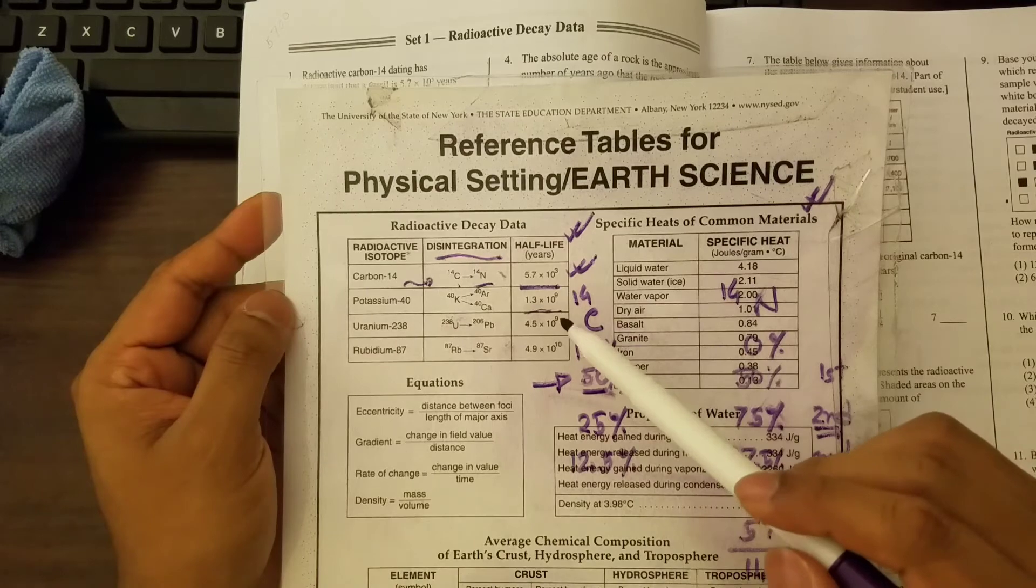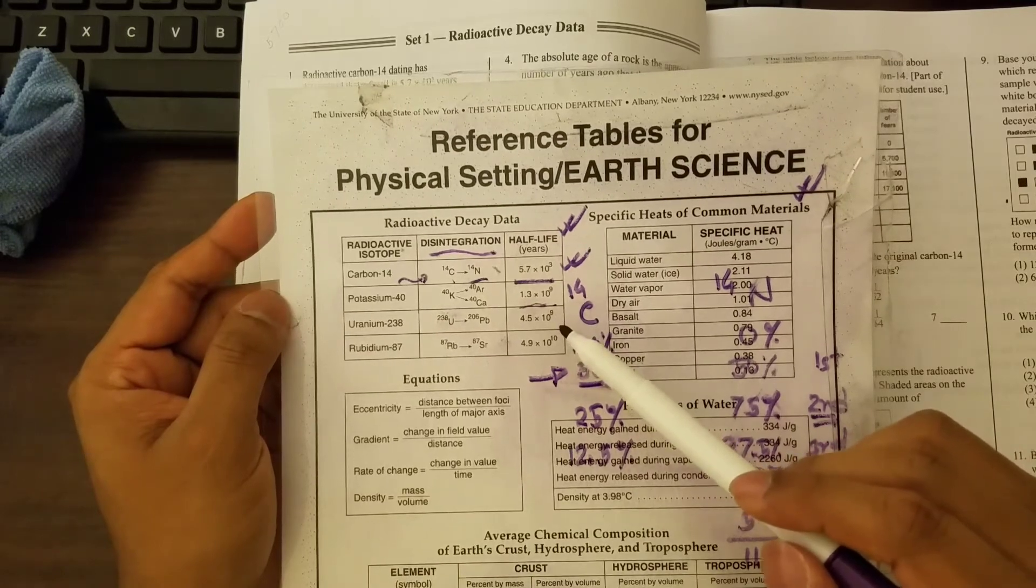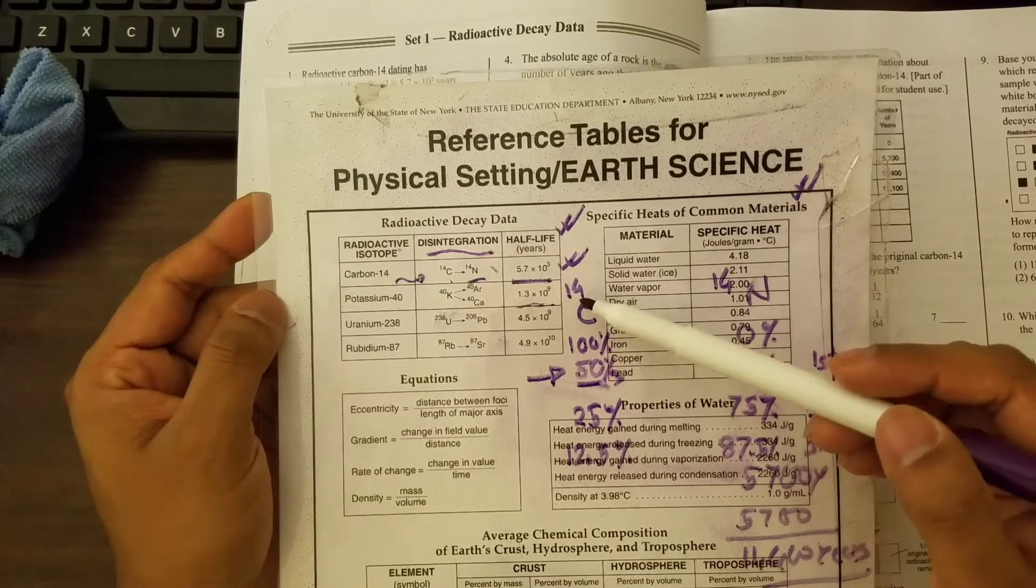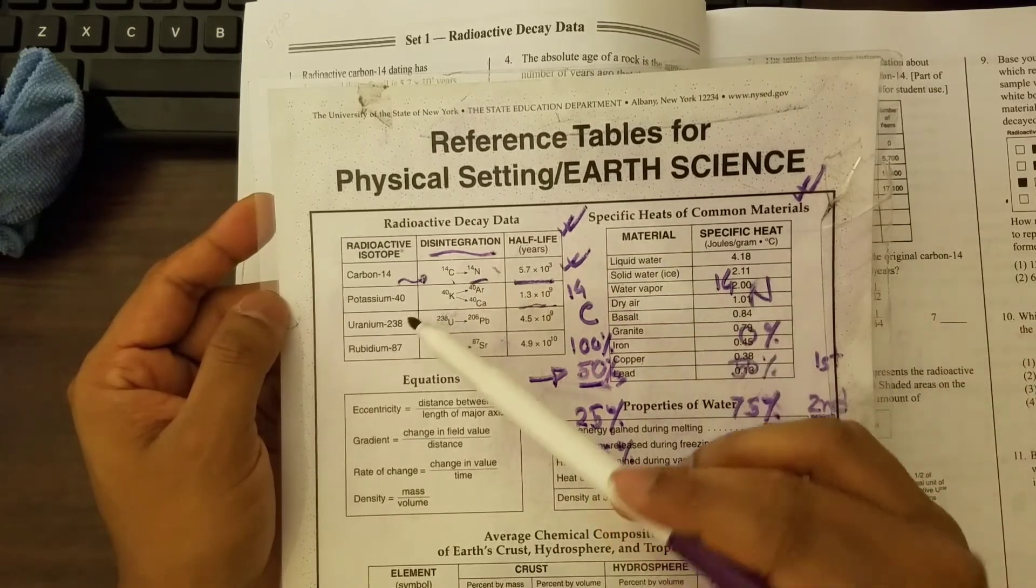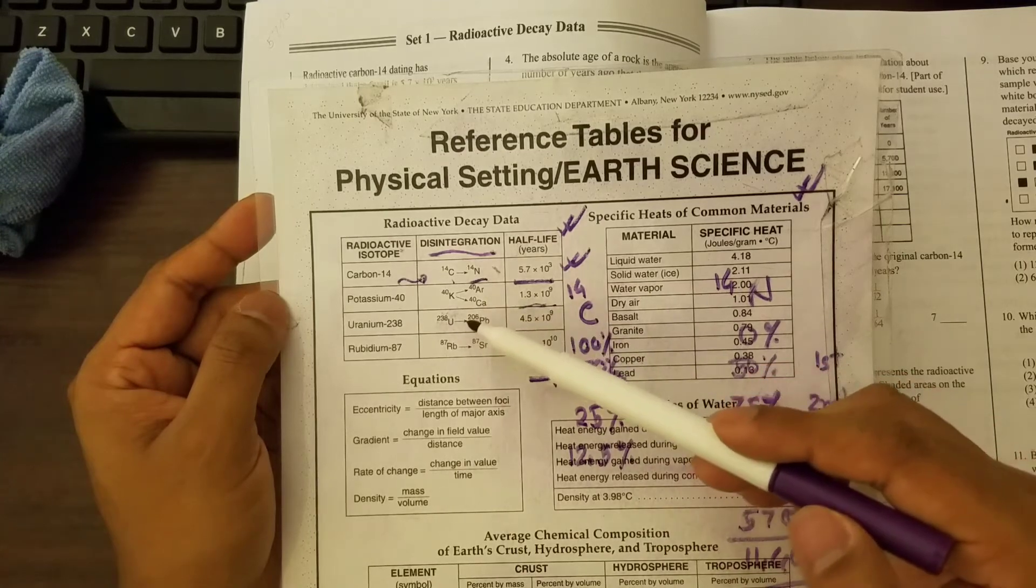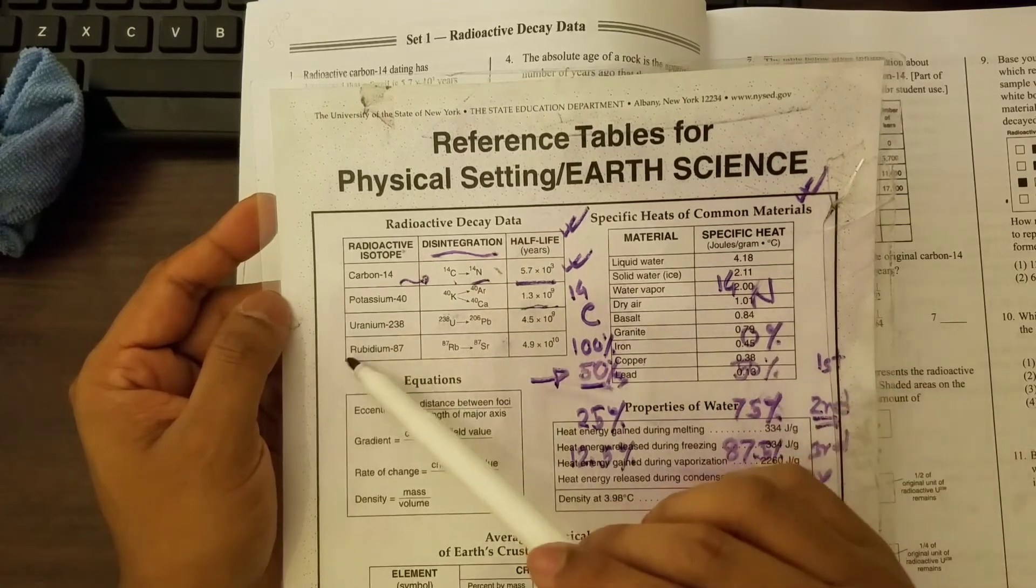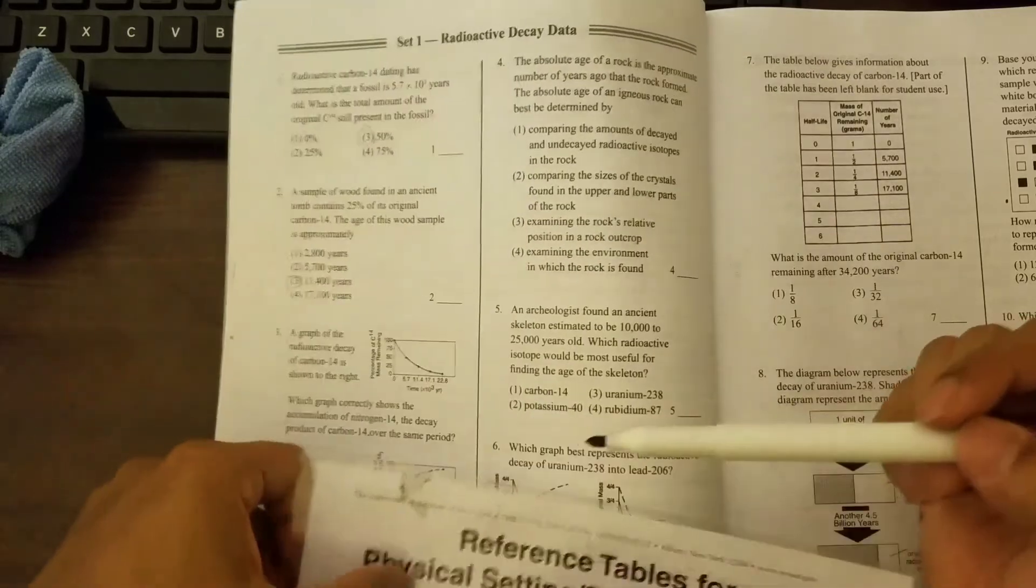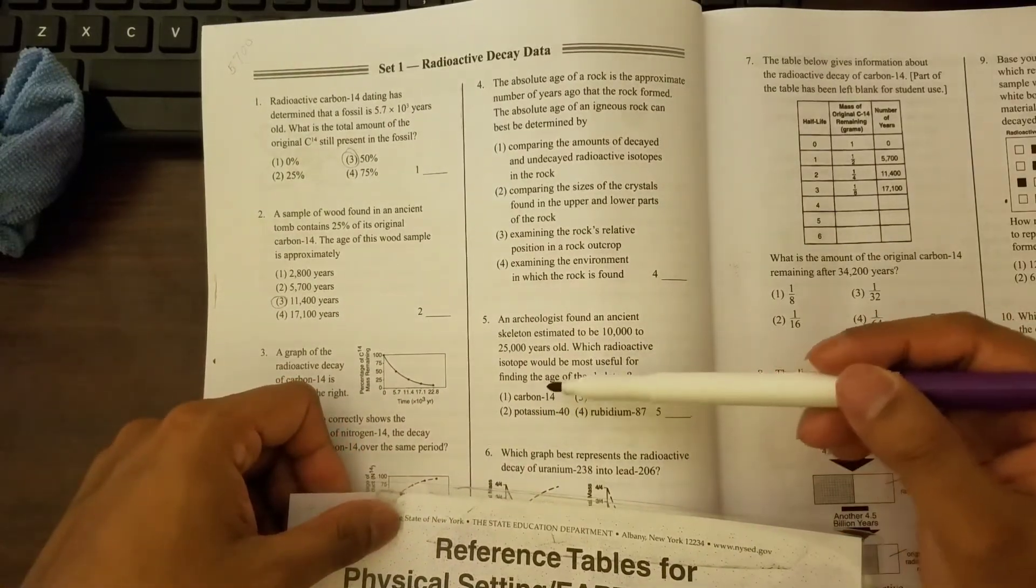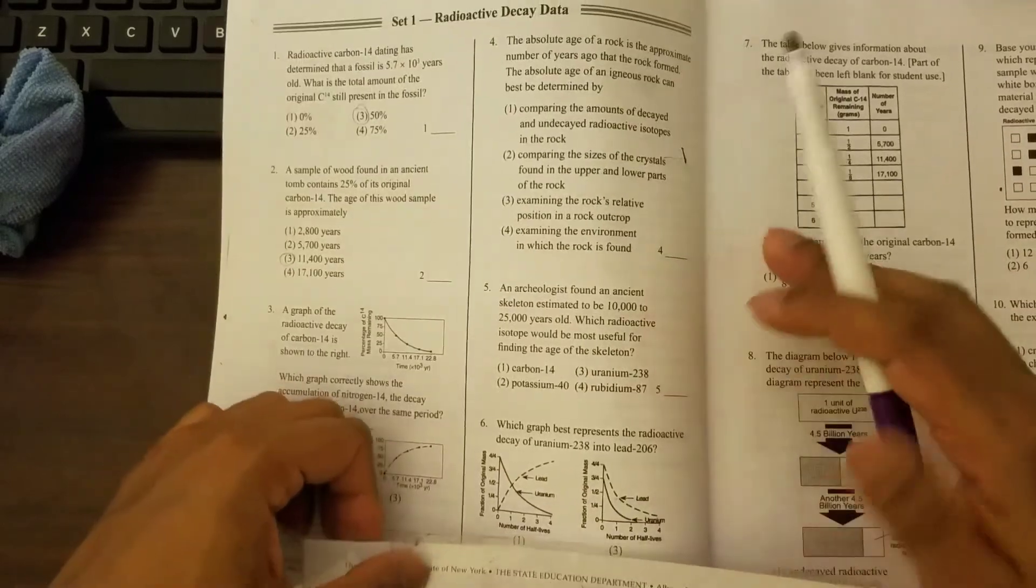So if something, let's say you found a rock and it's very old, it contains potassium or uranium. So in that case, it is better to use potassium or uranium. But if it's only 25,000 years old, then we have to use carbon-14.